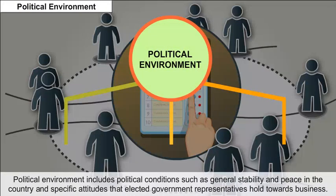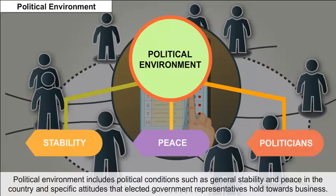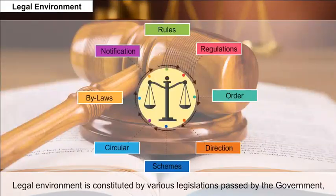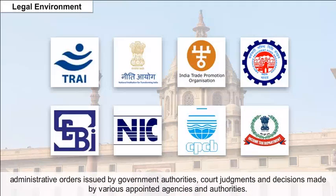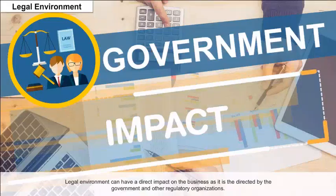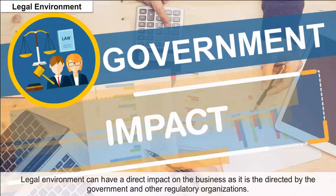Political Environment: Political environment includes political conditions such as general stability and peace in the country, and the specific attitudes that elected government representatives hold towards business. Legal Environment: Legal environment is constituted by various legislations passed by the government, administrative orders issued by government authorities, court judgments, and decisions made by various appointed agencies and authorities. Legal environment can have a direct impact on the business as it is directed by the government and other regulatory organizations.